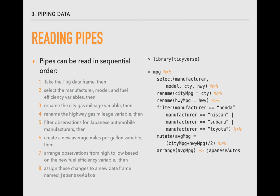Then five, filter observations for Japanese automobile manufacturers, then six, create a new average miles per gallon variable, then seven, arrange observations from high to low based on the new fuel efficiency variable, then eight, and finally, assign these changes to a new data frame called Japanese autos.